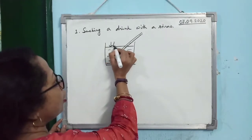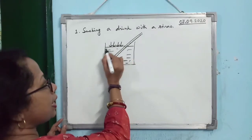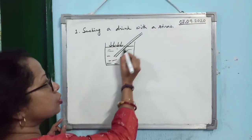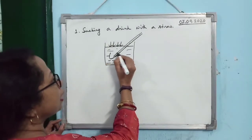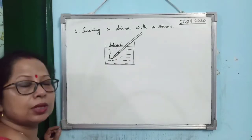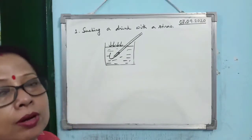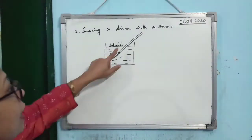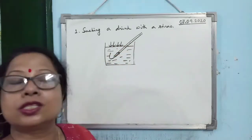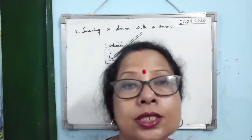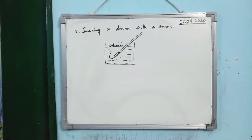Outside, atmospheric pressure acts on the liquid, creating a high pressure region. Inside the straw, a low pressure region is created. So liquid moves from high pressure to low pressure, continuously entering your mouth. If atmospheric pressure were not there, liquid would not enter the straw.